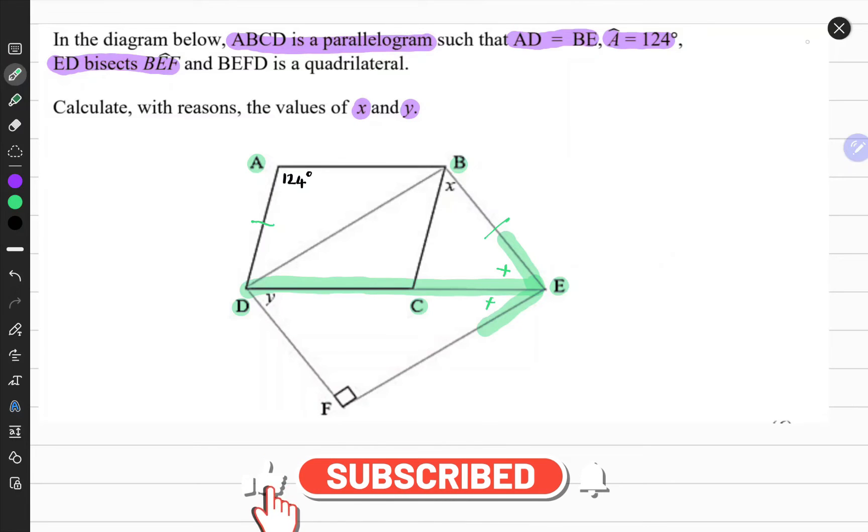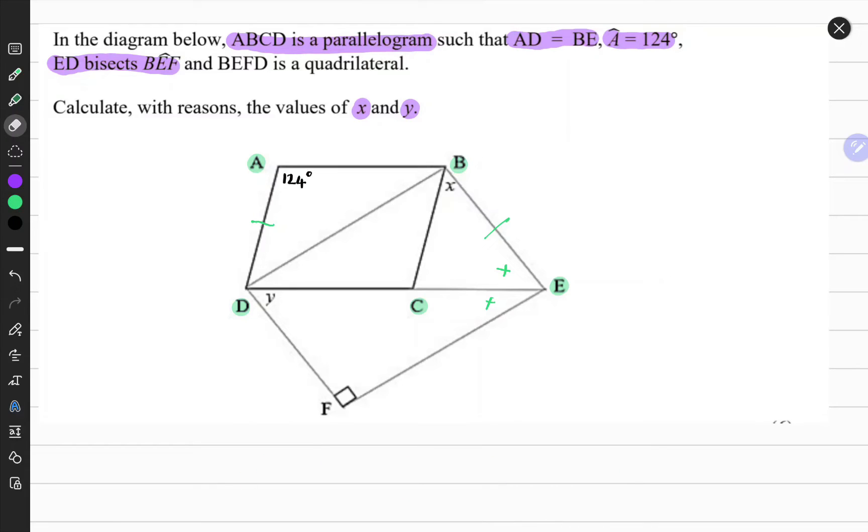What that essentially means is it splits these two angles into equal parts. To calculate with reasons the values of x and y, we're going to have to find some of the unknowns in the given diagram. A good place to start is to find the unknowns in the parallelogram by using the properties of a parallelogram.